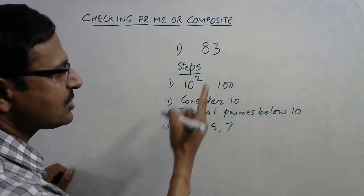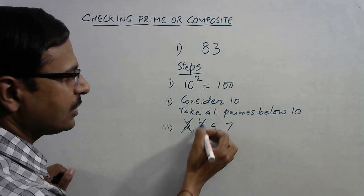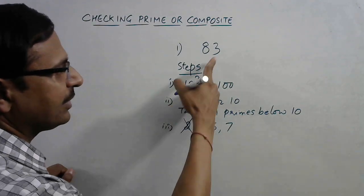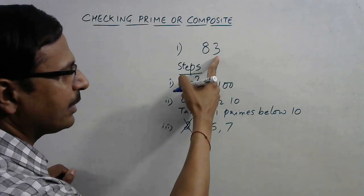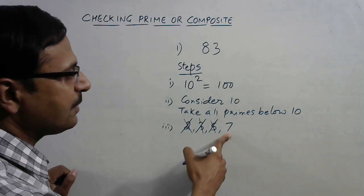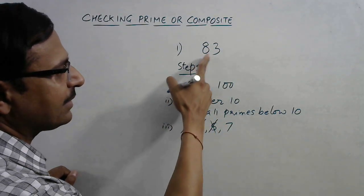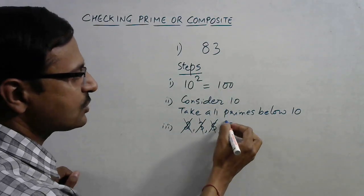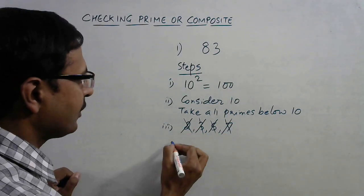For 5, the number is ending with 3, so no number ending with 3 can be divisible by 5, so this is also gone. Divisible by 7? 7, 1 plus 7 is 13 left, which is not divisible, so 7 also ruled out.